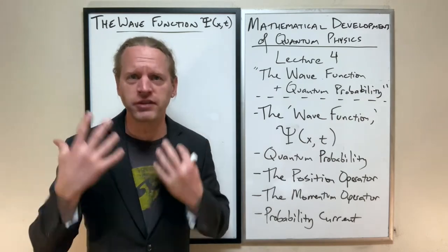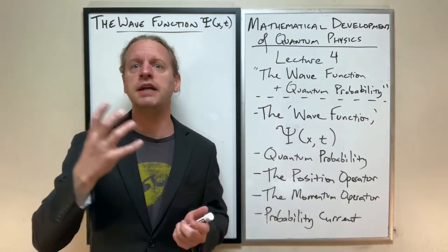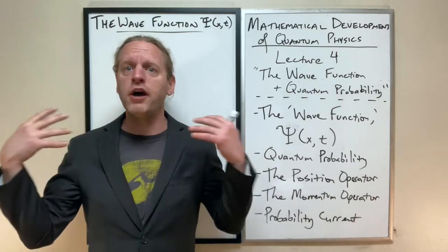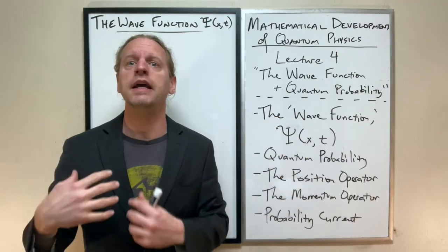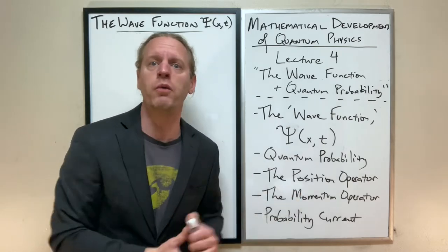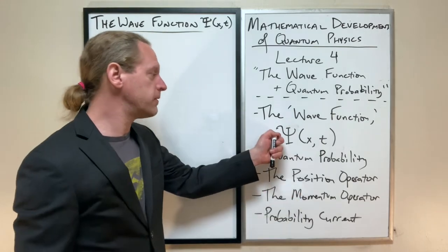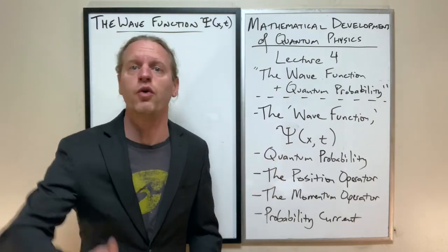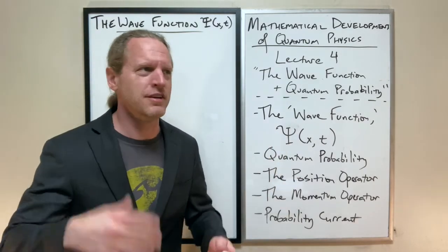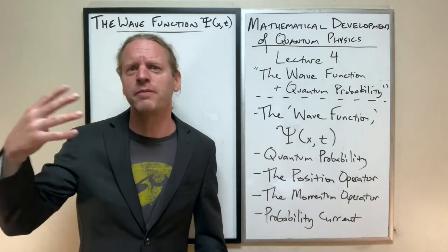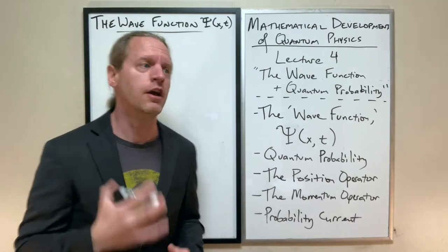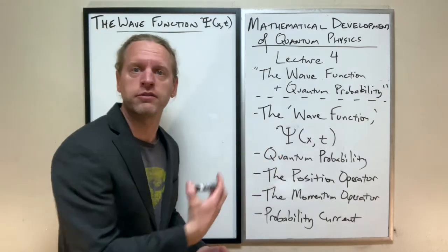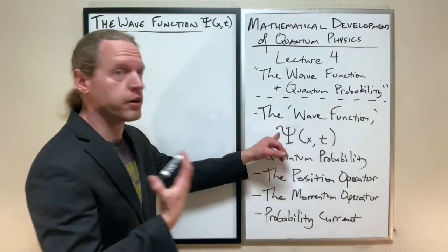The wave function encapsulates basically everything we ever need to know about a particle, as long as we know something about the environment it's in. That's what the philosophy of physics comes down to: given what we know about a system and what we know about the things it's interacting with, it allows us to predict exactly what will happen in the future. The only difference is quantum physics uses a much stranger set of rules than Newton's or even electrodynamics.